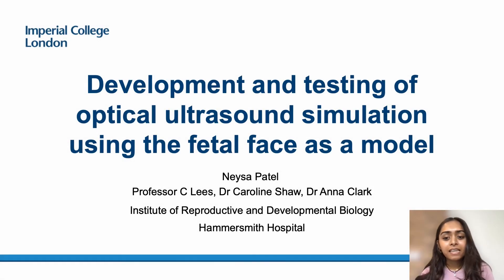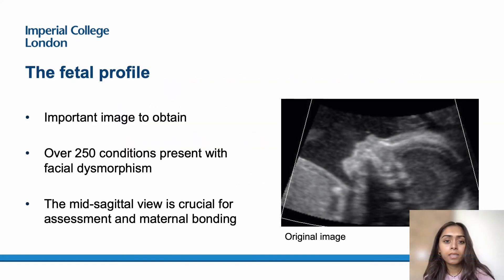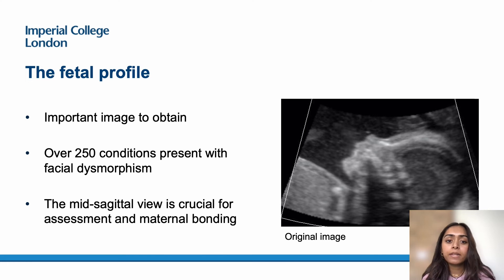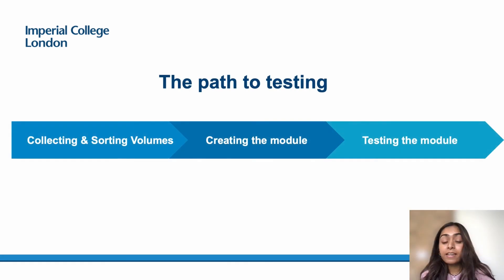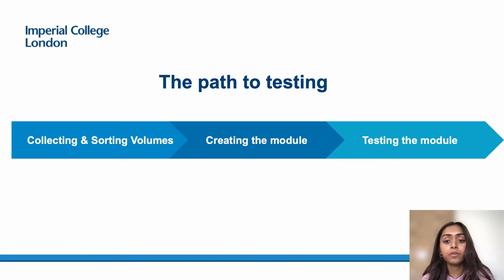To test the efficacy of OPUS, we created a new module targeting the fetal profile for novices and experts to test. We decided on this image as it's a common place for abnormalities to present and it's important for maternal bonding and obstetric scanning. OPUS collects information on time taken to achieve the image, number of probe movements, total distance travelled by the probe, and accumulated angling. This data is stored offline for analysis.